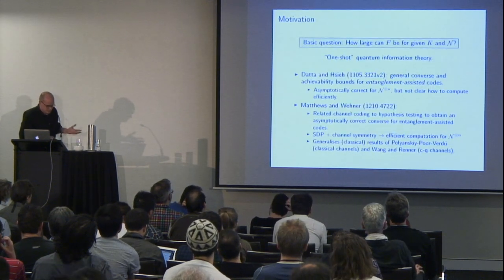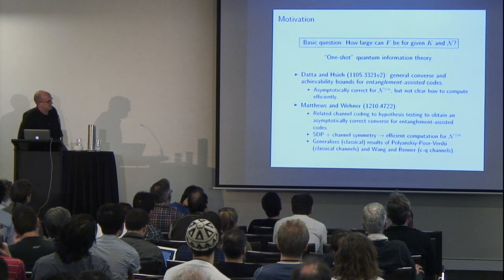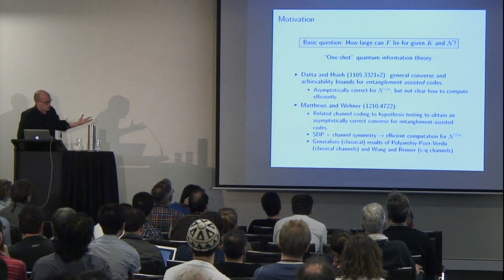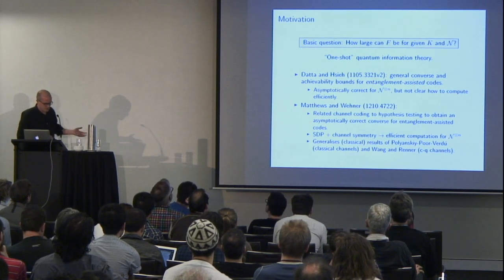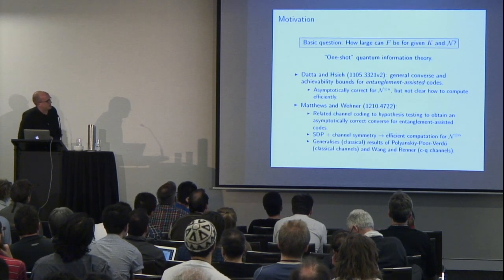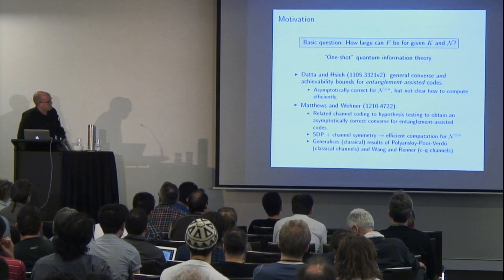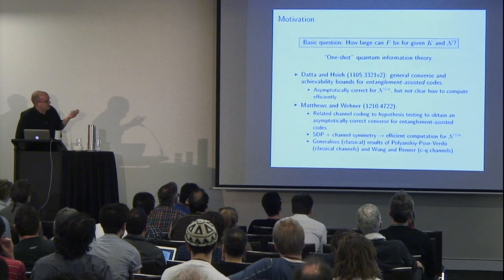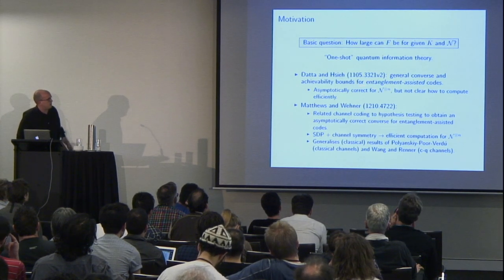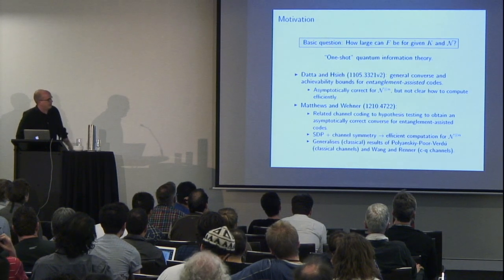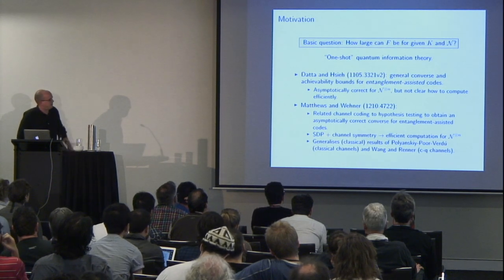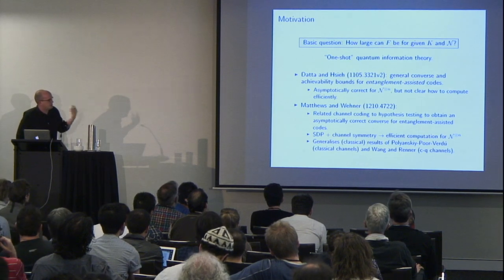Our motivation is a very basic question: how large can this fidelity be for a given code size and noisy channel? This is the domain of so-called one-shot quantum information theory. There are many results addressing issues of this kind — it's a finite block length question. N could be one or more uses of a channel, but we're not interested in asymptotics. Relevant here are the general converse and achievability results of Datta and others, which give upper and lower bounds that are asymptotically correct for many uses of the channel, recovering the known expression for asymptotic capacity, but it's not clear how to compute them at finite block length efficiently.